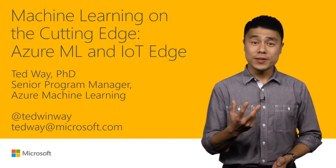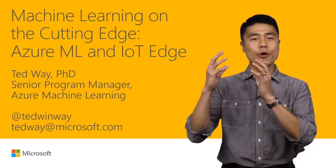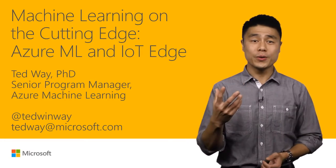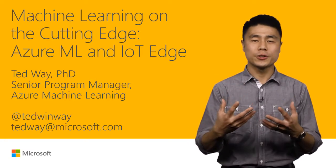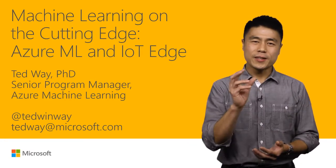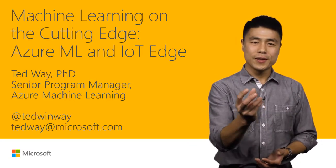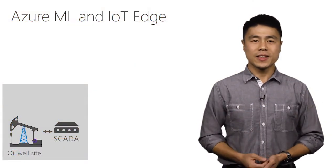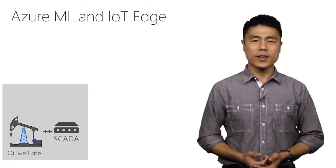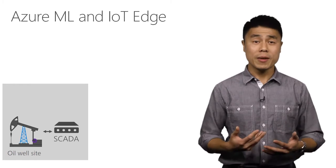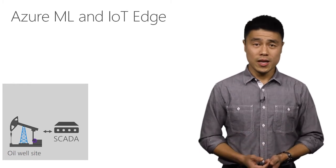This means using the power of the cloud with elastic compute and storage to train machine learning models, and then deploying them to edge devices. To illustrate this, let me talk about work that Schneider Electric is doing when they pump oil.